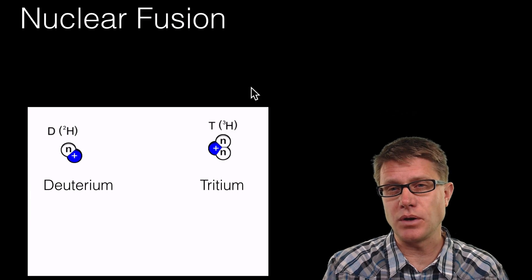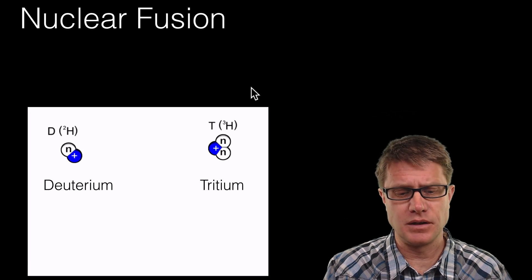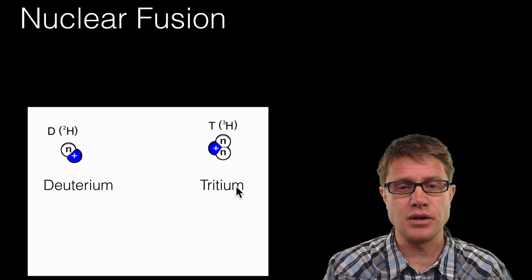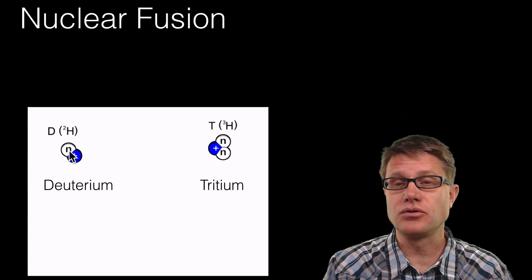If we were to look at fusion, fusion we have two nuclei that fuse together. An example we would see in the sun is deuterium and tritium. And so those are two isotopes of hydrogen. And so it is hydrogen but it has a neutron. We sometimes call it a heavy hydrogen.